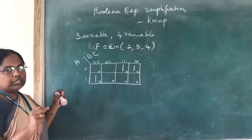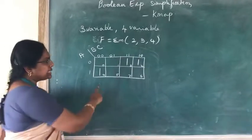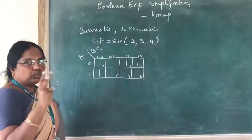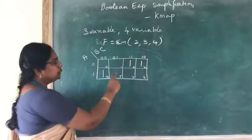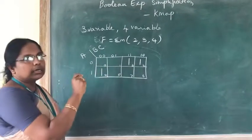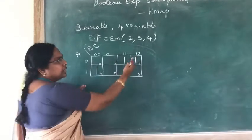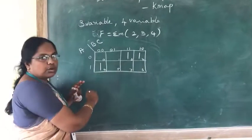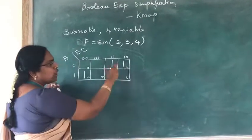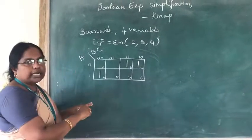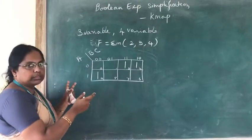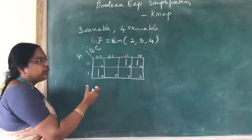We always give preference to the maximum sized group. In this example, cells 2 and 3 can be grouped as neighboring cells. There are two types of neighbors: square adjacency and wraparound adjacency. In wraparound adjacency, the last column and first column are adjacent, and the first row and last row are adjacent to each other.